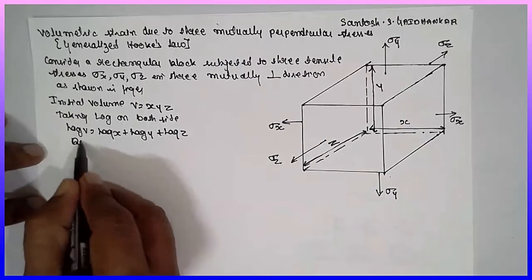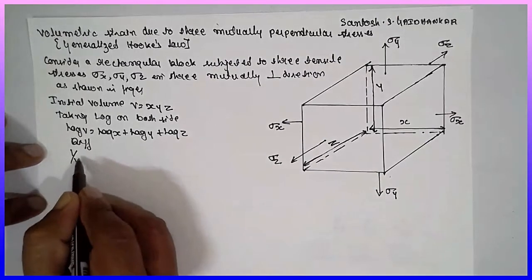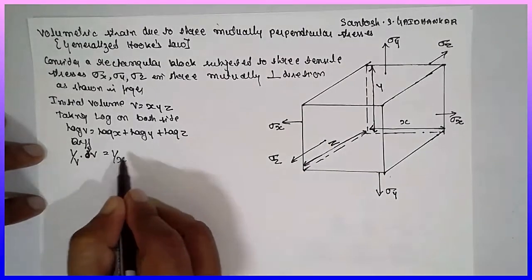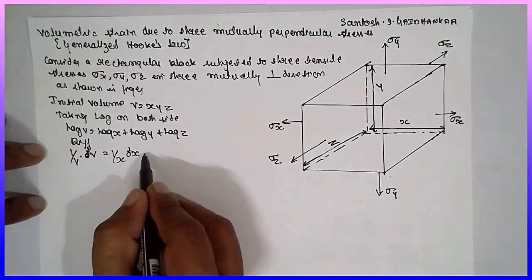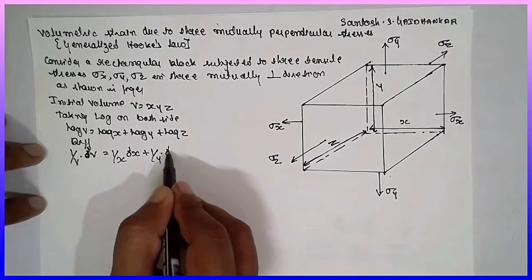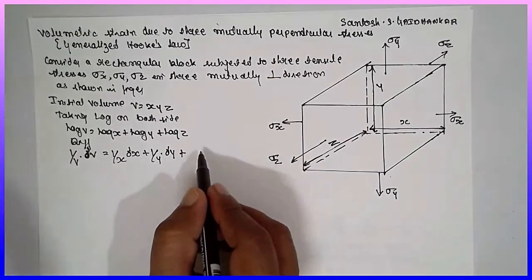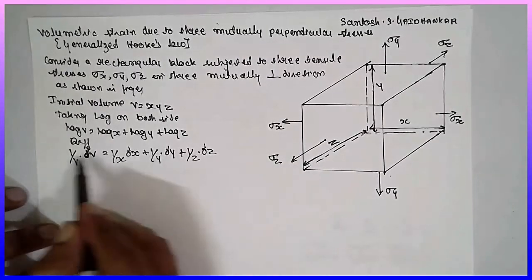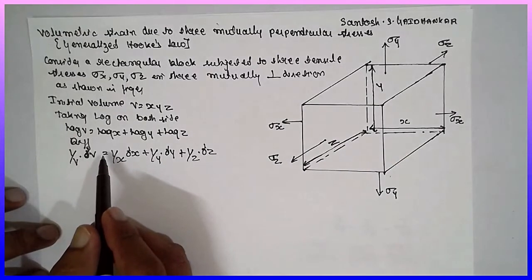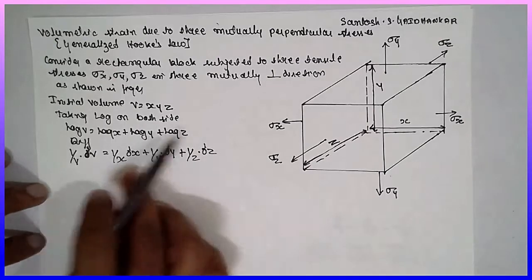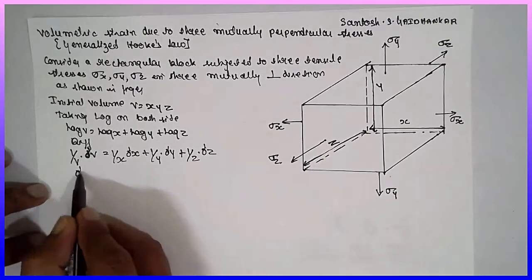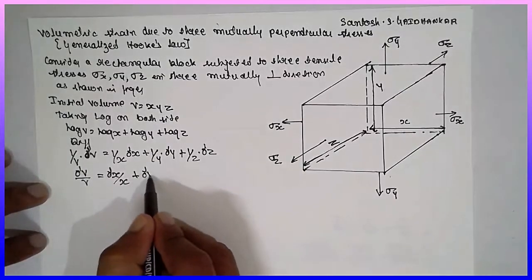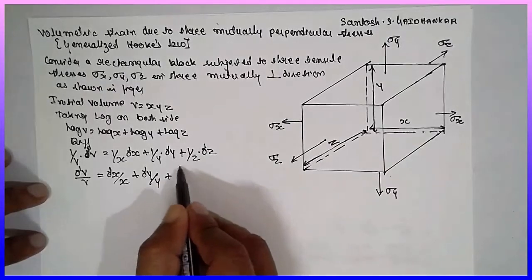Differentiating both sides: 1/V × dV equals 1/x × dx plus 1/y × dy plus 1/z × dz. Therefore, delta V by V equals delta x by x plus delta y by y plus delta z by z.